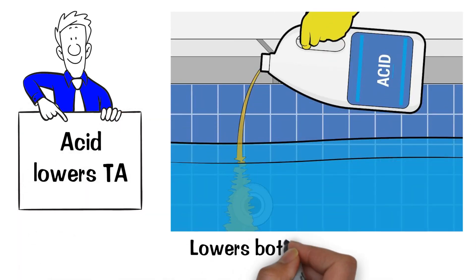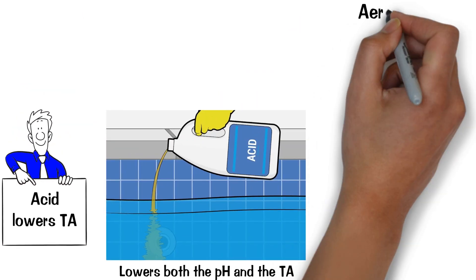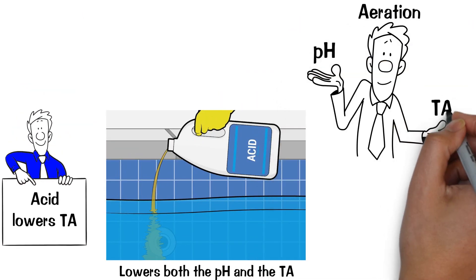Adding acid lowers both the pH and the TA, then aeration raises the pH without changing the TA.